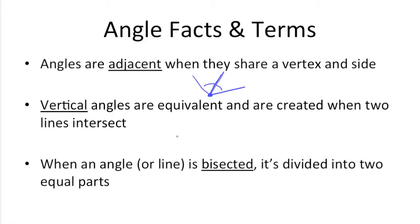Vertical angles are equivalent and are created when two lines intersect. So we have an X here. This angle here and this angle here are vertical angles. They're going to be equivalent. So if this were 60 degrees, this would have to be 60 degrees. So if this were 120 on this side, this would have to be 120 on this side. These angles straight across are vertical angles and they'll always be equivalent.